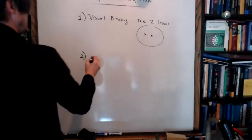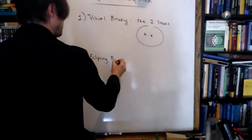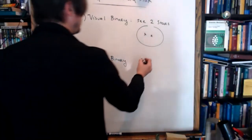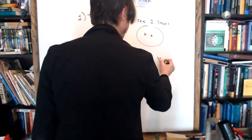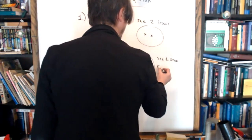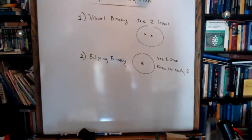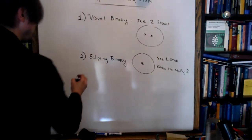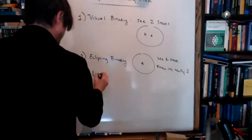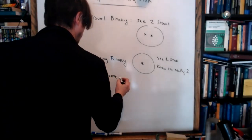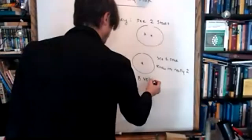The second type is called an eclipsing binary. With an eclipsing binary, you can only see one star, but you know it's really two stars. The way you know it's really two stars is by taking something called the light curve — a plot of brightness versus time.